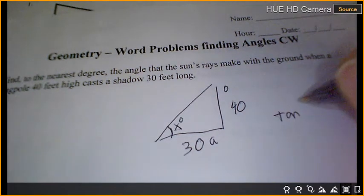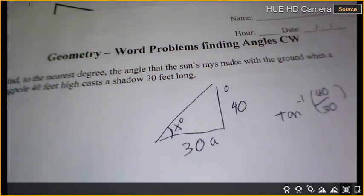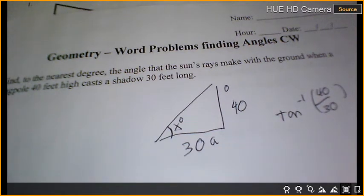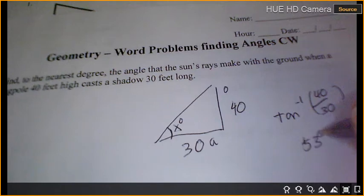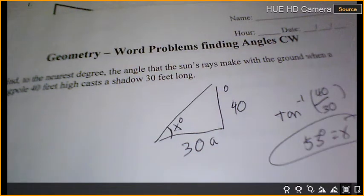Tan negative 1 equals opposite 40 over adjacent 30. Trig function, tan negative 1. 40 divided by 30. We get 53 degrees. Questions about that so far?